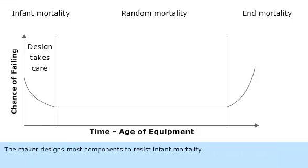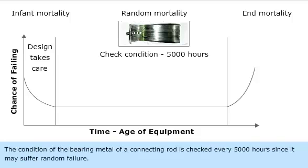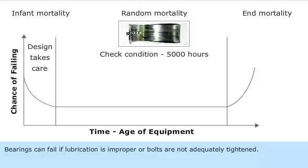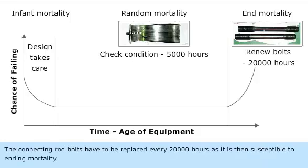The maker designs most components to resist infant mortality. The condition of the bearing metal of a connecting rod is checked every 5000 hours, since it may suffer random failure — bearings can fail if lubrication is improper or bolts are not adequately tightened. The connecting rod bolts have to be replaced every 20000 hours, as they are then susceptible to ending mortality.